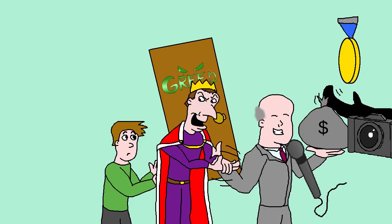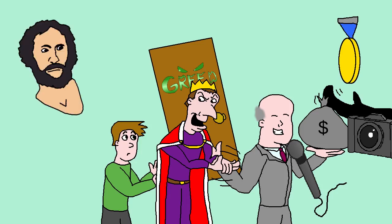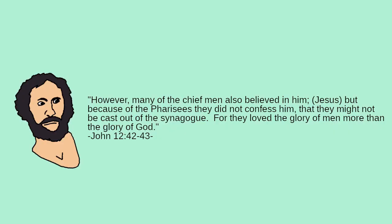This, in turn, results in them making more bad decisions in order to maintain these famous friendships, like what's described in the Gospel of John. However, many of the chief men also believed in him, but because of the Pharisees they did not confess him, that they might not be cast out of the synagogue, for they loved the glory of men more than the glory of God. John 12, 42-43